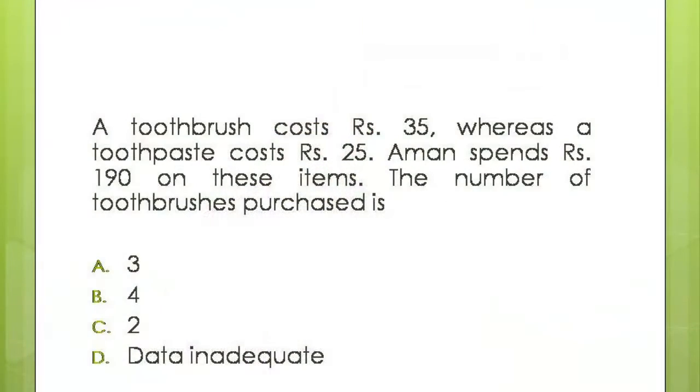The question says a toothbrush costs 35 rupees whereas a toothpaste costs 25 rupees. Aman spends 190 rupees on these items, so the number of toothbrushes purchased is 3, 4, 2, or data inadequate. Now let me quickly evaluate the options.